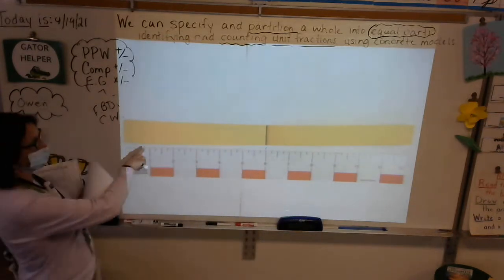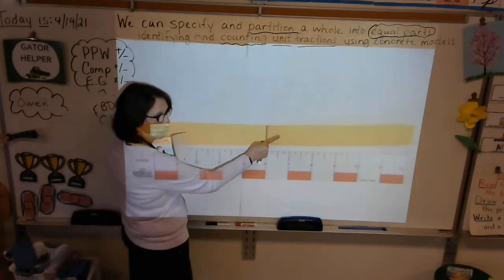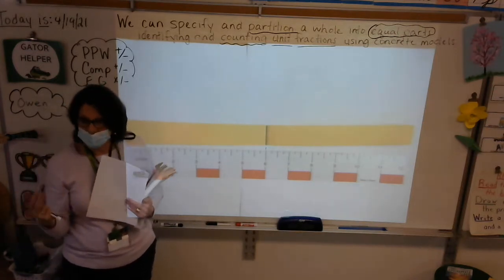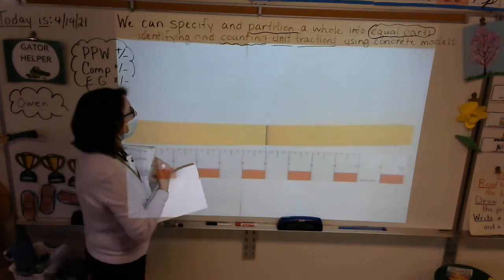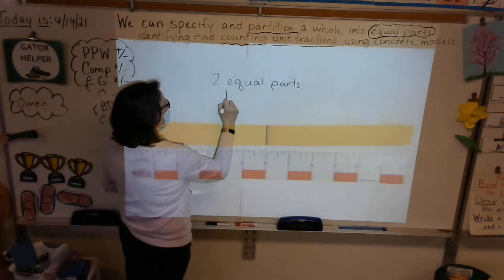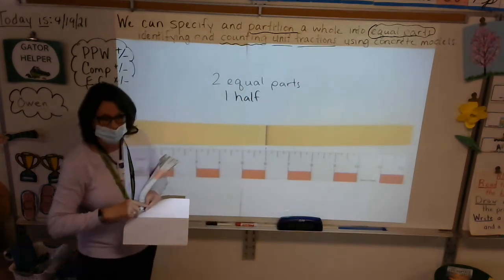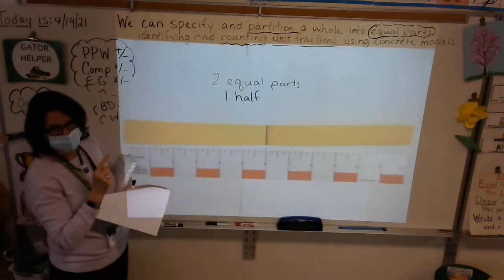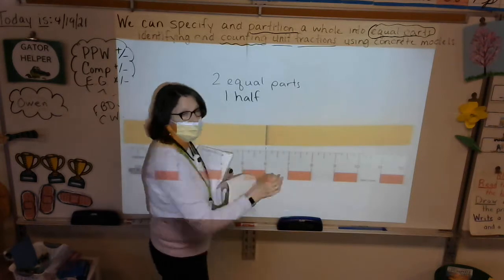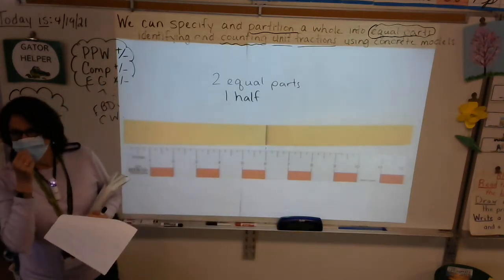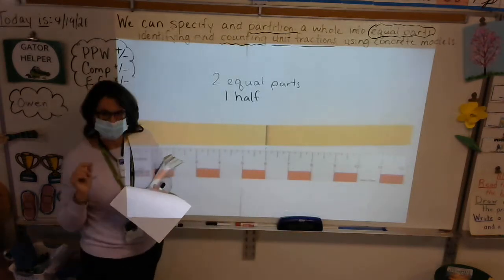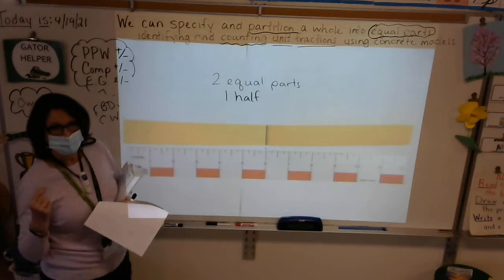How many equal parts did we divide our fraction strip into? Let's count — one, two. We have two equal parts. We divided our fraction strip into halves, so each part is called one half. Let's count them: point to your strip and count — one half, two half. Just like dressing up your numbers, we're counting units — we're counting halves. You would never just count 'one, two'; you count 'one half, two half.'